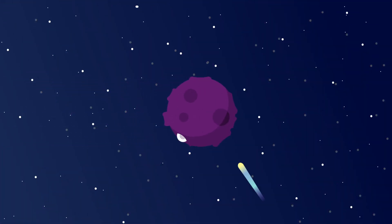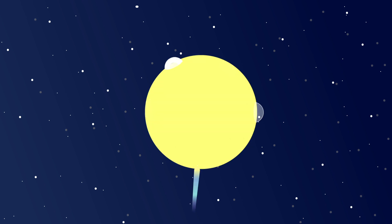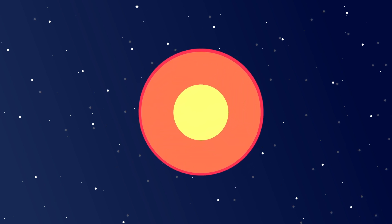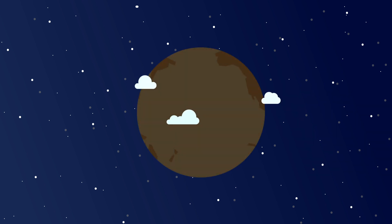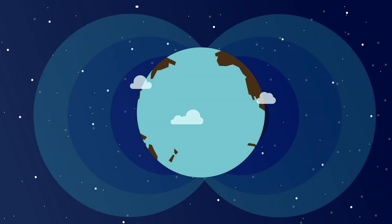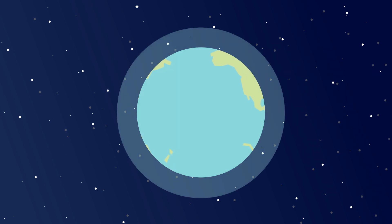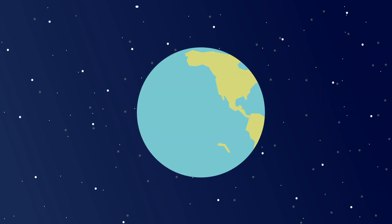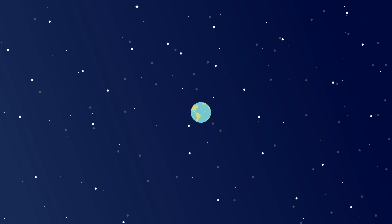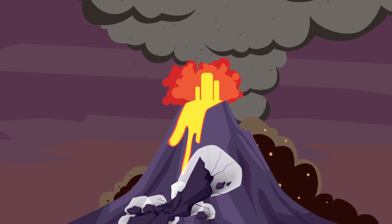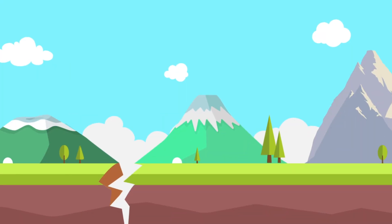Today we covered how the Earth was born and how life came into existence. There were many steps involved in these processes. The birth of the Earth and life is every bit as magical and interesting as the birth of humans. We hope that today's lesson has helped you understand how our planet came into existence and how primitive life forms, our ancestors, were born. Next time, we'll talk about the ultimate disasters: volcanoes and earthquakes.